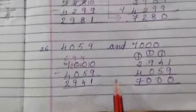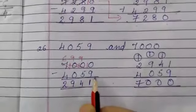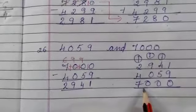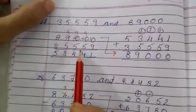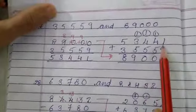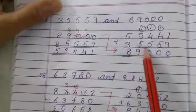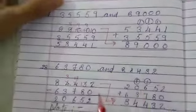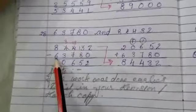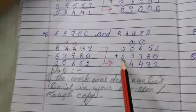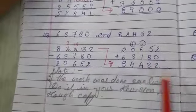Same is with sum 26. 7,000 minus 4,059, we get the answer 2,941. And we add this and we get the answer 7,000. The next sum is 89,000 minus 35,559, we get the answer 53,441. We again put here 53,441 and add 35,559, we get 89,000. So this is the way we check our answer. 84,432 minus 63,780. We borrowed and subtracted. We got 20,652 plus 63,780, we got 84,432.